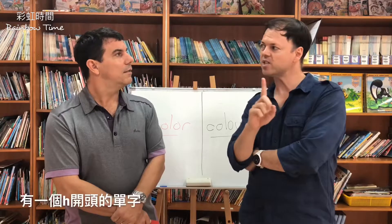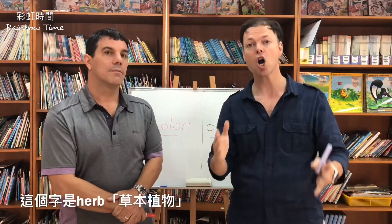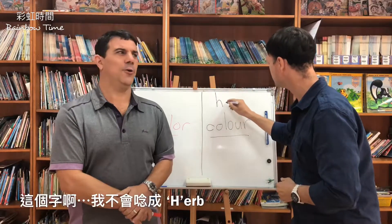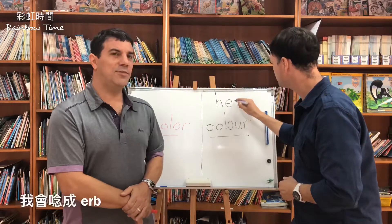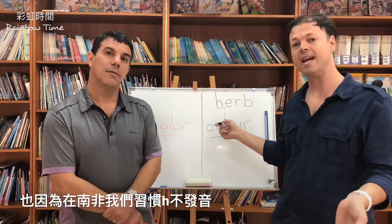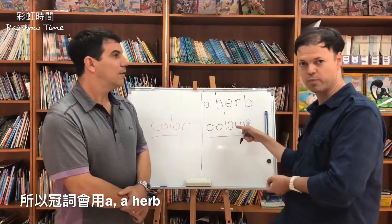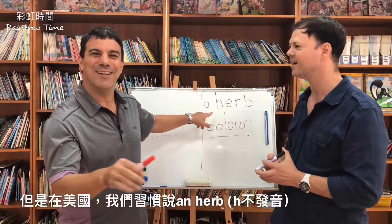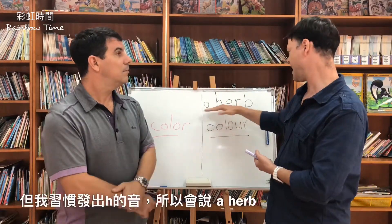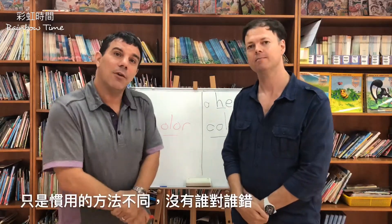There's a word that starts with an H. In South Africa, we pronounce the H — we actually say herb. Herb? You don't say herb, you say herb. You don't pronounce the H. Because we pronounce the H, we would say 'a herb.' In America, we would say 'an herb.' We pronounce the H, so we say 'a herb.' Just different ways of saying it. Both are right.